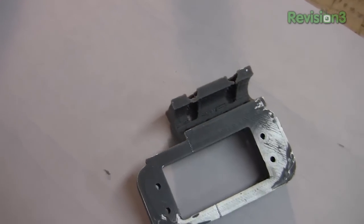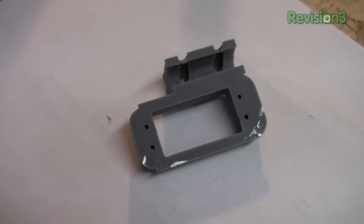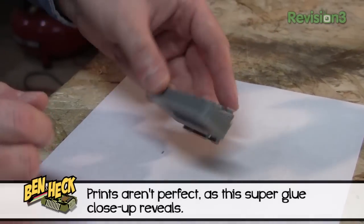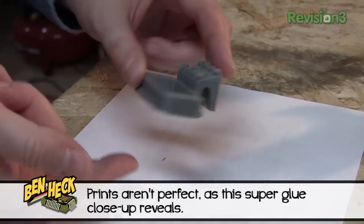You always need to pick a bottom of your project where the print will start from. This area will have less accuracy than the rest of the print. This is less of a problem with stereo lithography resin printers, but those are expensive and less common.